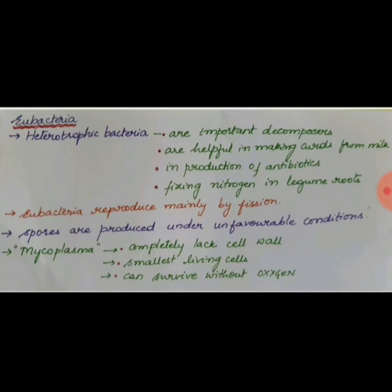Heterotrophic bacteria are included under eubacteria. They are important decomposers, help in making curd from milk, the production of antibiotics, and fixation of atmospheric nitrogen in legume roots. Eubacteria reproduce mainly by fission. Spores are structures produced under unfavorable conditions in bacteria and also in fungi. Mycoplasma is a type of eubacteria that completely lacks a cell wall, is the smallest living cell, and can survive without oxygen.